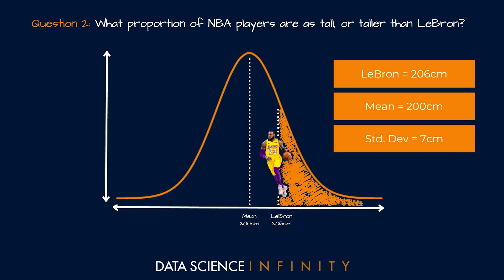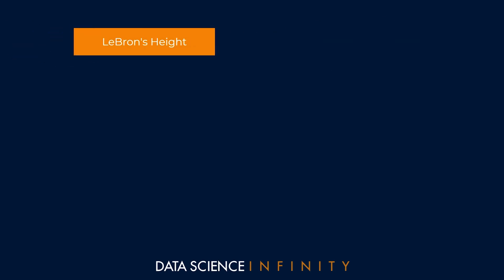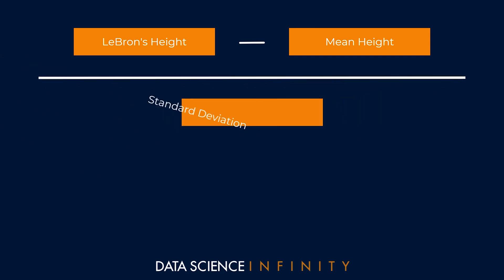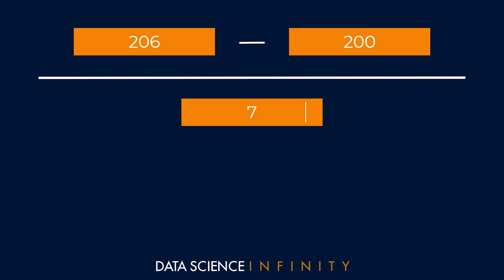Let's start with question one. Since we know LeBron's height, the mean height for players in the NBA, and the standard deviation, this is actually nice and easy. We just need to take LeBron's height, subtract the mean height of all the players in the NBA, and then divide that by the standard deviation. So: LeBron's height of 206 centimeters minus the mean height of 200 centimeters, all divided by the standard deviation of 7 centimeters.